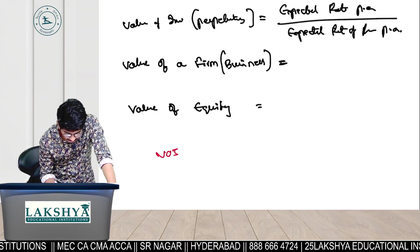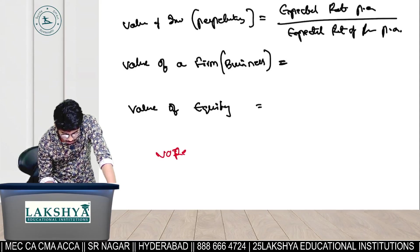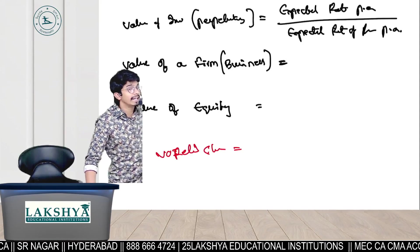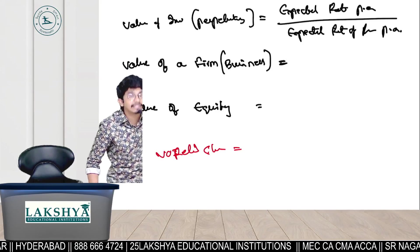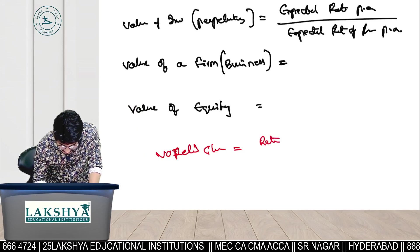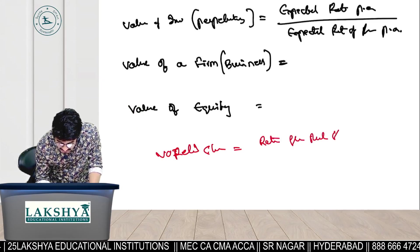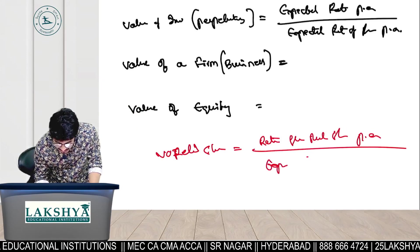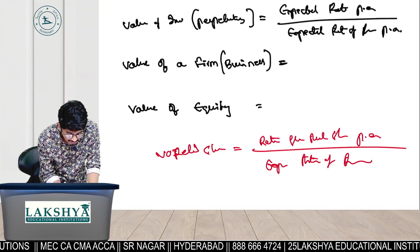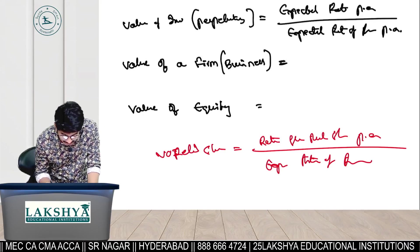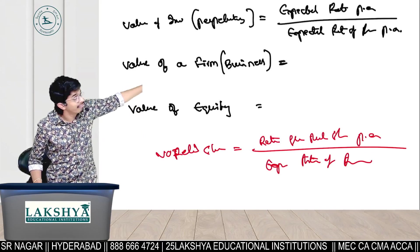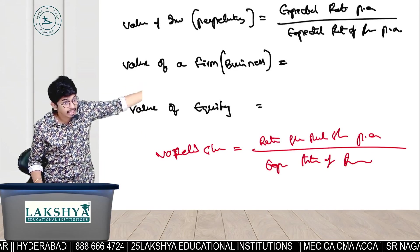Let us take an example. Value of investment — say value of Reliance shares. To find the value of that investment, in the numerator we put the expected return from Reliance shares per annum, divided by the expected rate of return.